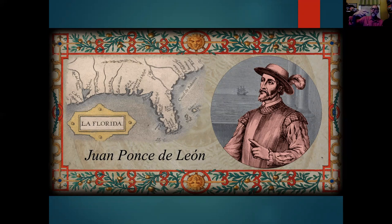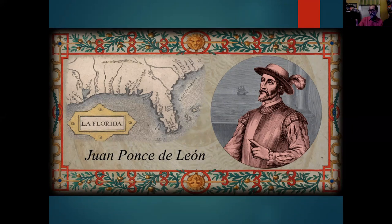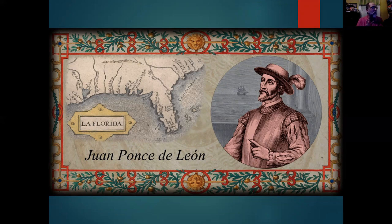That national seashore — Cape Canaveral National Seashore — gets about 20,000 sea turtle nests every year. And that's even after the numbers went down. Can you imagine what the numbers would have been in the 1500s? Hundreds of thousands, maybe. Ponce de León was only there for a few days, but he and his men captured 170 green sea turtles and loaded them onto the ships.